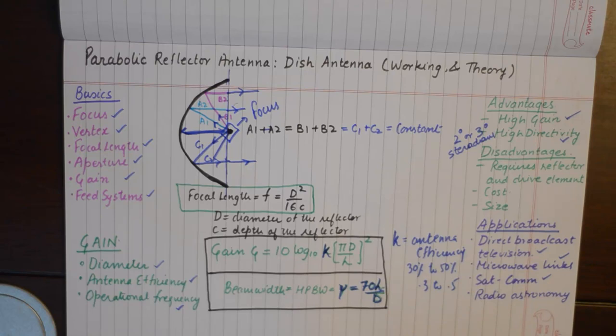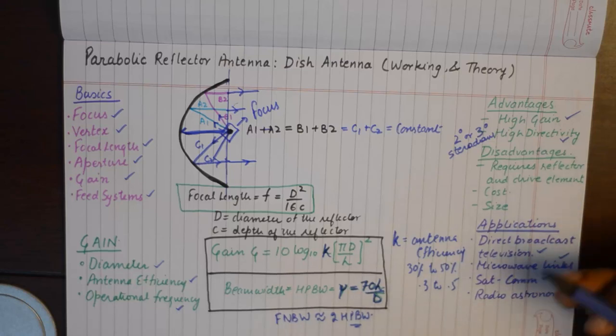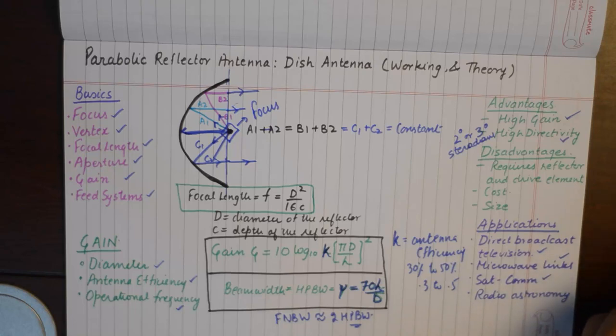From half power beam width you can calculate first null beam width, which is typically twice of half power beam width. With these basic things in mind, you shall be able to attempt questions on parabolic reflector antennas.